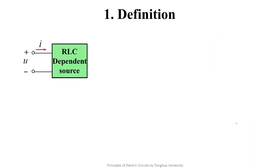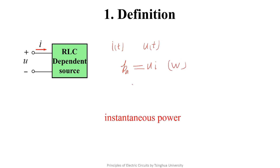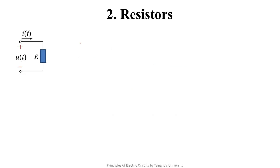Next, we will analyze carefully in the time domain how to calculate the power inside SSS of dynamic circuits. In the time domain, the current I is expressed as a function of time I(t) and the voltage U is expressed as U(t). For a one-port network where U and I have associated reference directions, the instantaneous power absorbed is P equals U times I. The unit is watts. This power is called the instantaneous power of the one-port network.